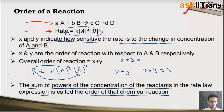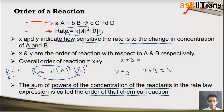If the overall order of a reaction is 1, it is known as a first order reaction. If it is 2, it is a second order reaction. If it is 3, it is a third order reaction. To recap: x represents the order of reaction with respect to A, y represents the order of reaction with respect to B, and x plus y represents the overall order of reaction.